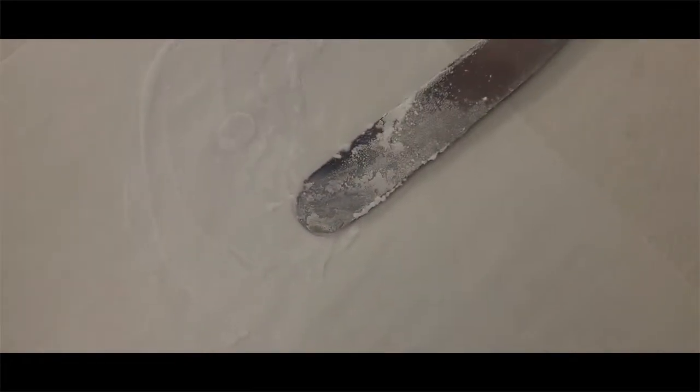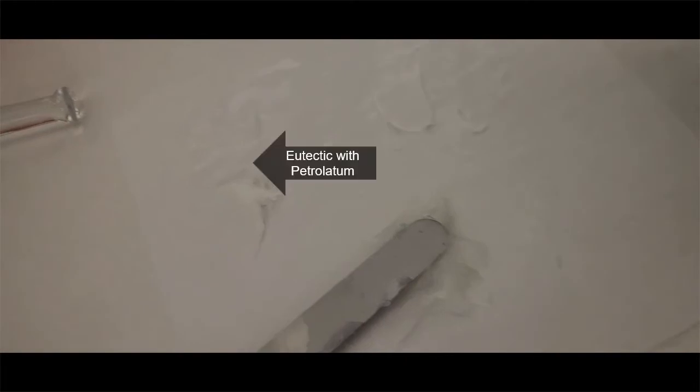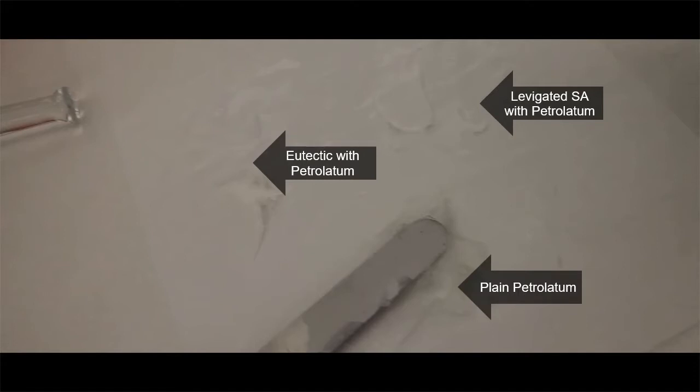So I'm going to again take another about a third of that white petrolatum that I have in the pile directly in front of me and I'm going to incorporate that. So right there, I'm taking some of that and I'm going to incorporate that into there. So now, ultimately, I'm going to have three piles in front of me. I'm going to have one pile that has the eutectic with petrolatum. The other pile has the levigated salicylic acid with white petrolatum. And then I have another pile just plain petrolatum.